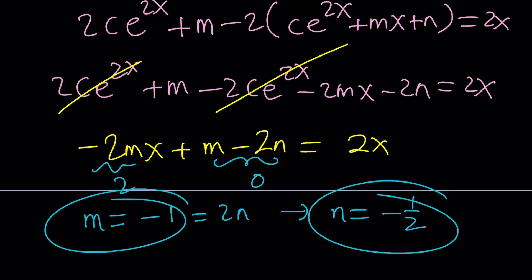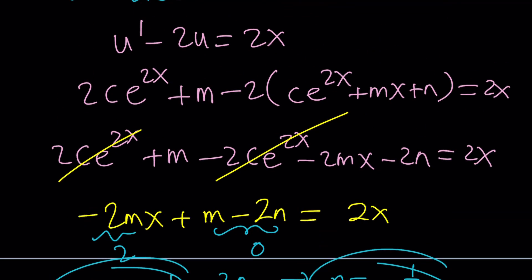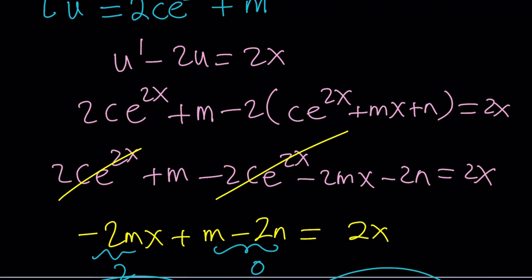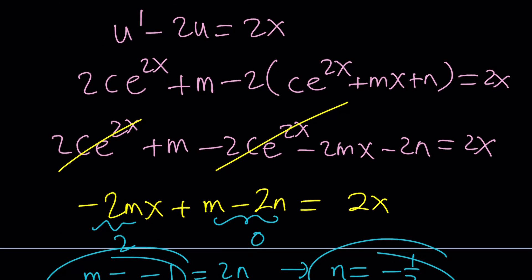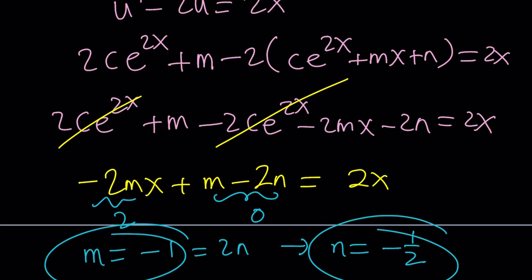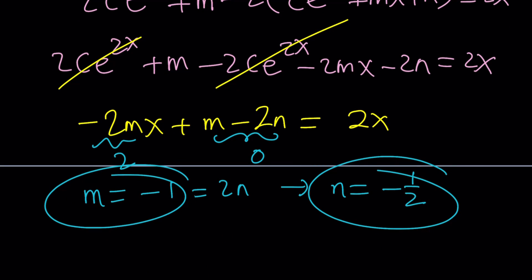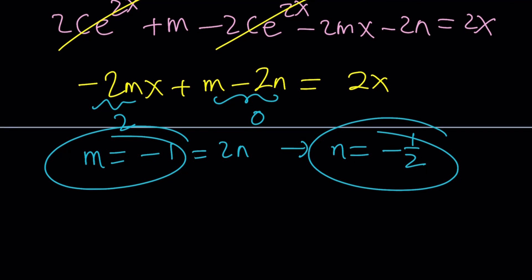Wait a minute. What is that supposed to mean? Well, it kind of means that, and if we didn't, hopefully, we didn't make any mistakes. Let me go ahead and check my work real quick. This is the 2u, and I subtract it, negative 2c, negative 2m, negative 2n. Yes, everything seems fine to me. Negative 2mx plus m minus 2n is equal to 0, and m is negative 1, and n is equal to negative 1 half.